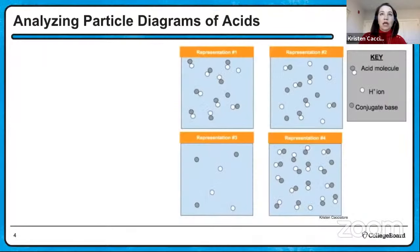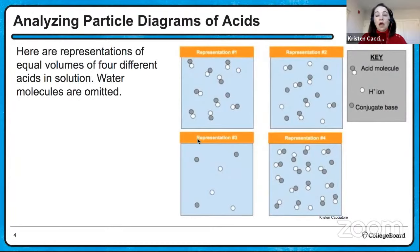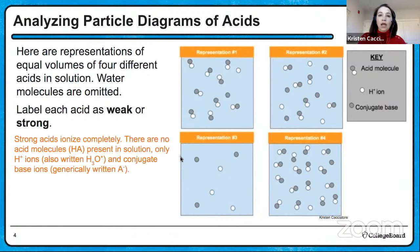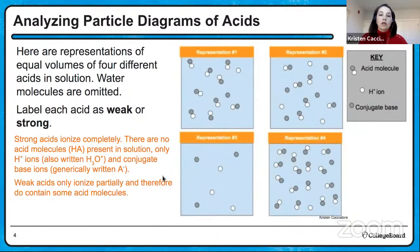First, we're going to look at some particle diagrams of some acid solutions. There are equal volumes in these four diagrams and water molecules are omitted. We have a key on the right that tells us what an acid molecule, an H-plus ion, and a conjugate base ion look like. The first thing to do is label each one as weak or strong. Strong acids ionize completely, so there will be no acid molecules or HA present in solution for a strong acid — only H-plus ions and conjugate base ions.